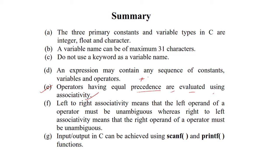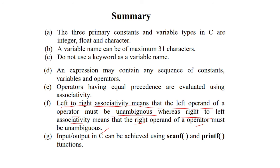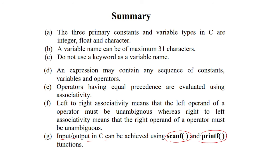If we have multiple operators like division and modulus at the first priority level in an expression, we need to calculate using the associativity of the expression. Left-to-right associativity means the left operand of the operator must be unambiguous, whereas right-to-left associativity means the right operand must be unambiguous. It depends on the expression which associativity applies. Lastly, input and output in C can be achieved using the scanf and printf functions.